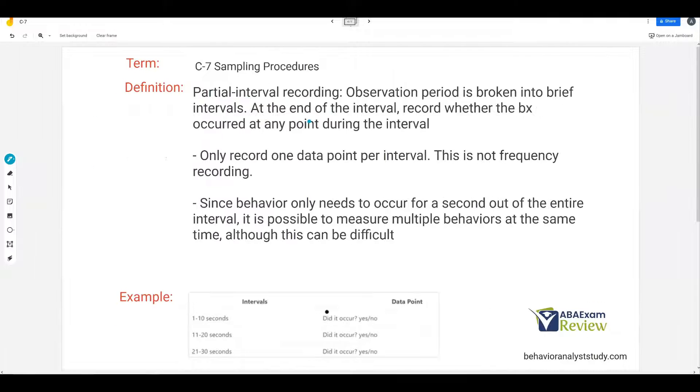What about partial? Well, partial is treated almost the same, except for the major difference is if I have six intervals at 10 seconds each, then I'm only worried about if the behavior occurred at any point during the interval. So one second, two seconds, three seconds, it doesn't really matter. If it occurs at all during the interval, I'm recording a data point. So if I have six intervals and the behavior occurred for a second in each of those intervals, I'm going to have six data points.